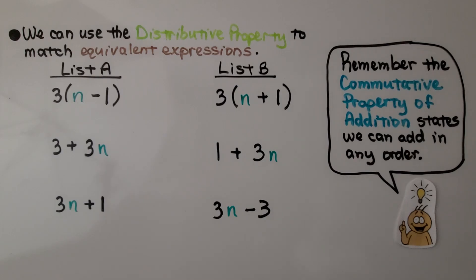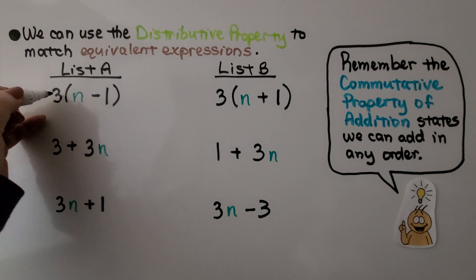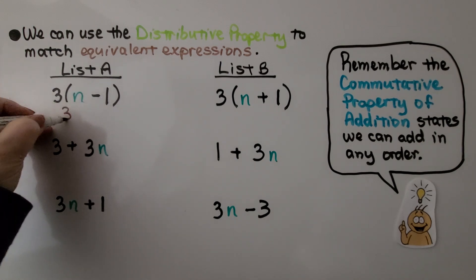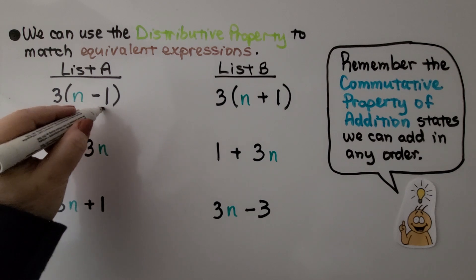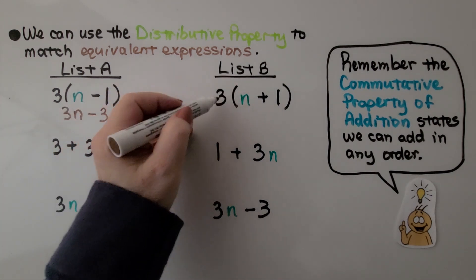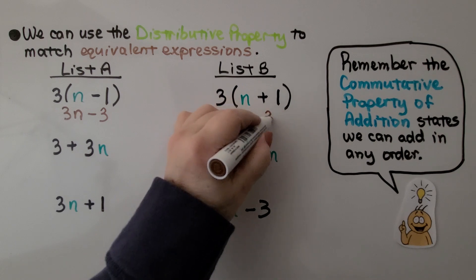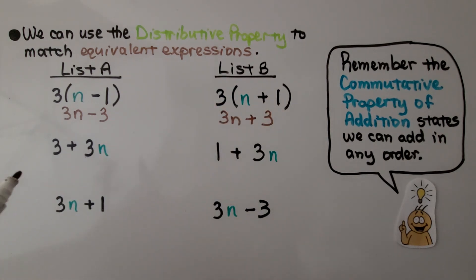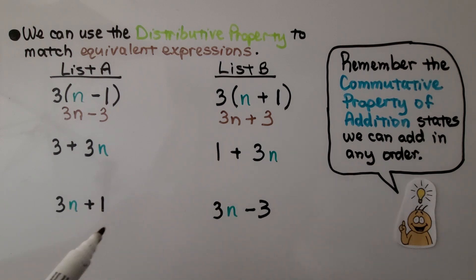We can use the distributive property to match equivalent expressions. Here we have some expressions in List A and some in List B, and we need to draw lines to match them. We can use the distributive property: 3 times n gives us 3n, and 3 times 1 with a minus sign gives us 3n minus 3. Distributing the 3 into the other parentheses gives us 3n plus 3. Using the commutative property of addition, we can add in any order, so 3n plus 1 matches with 1 plus 3n since they're just switched around.